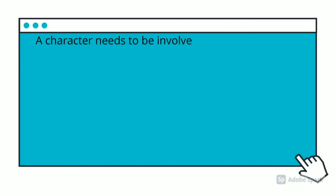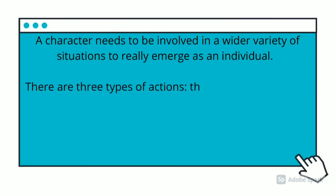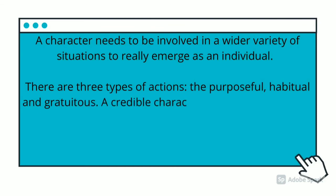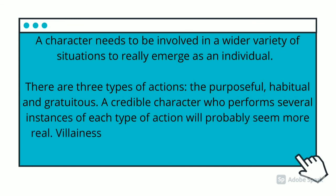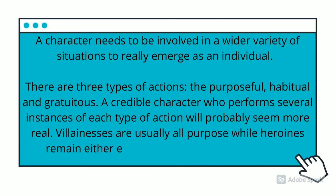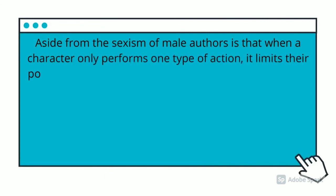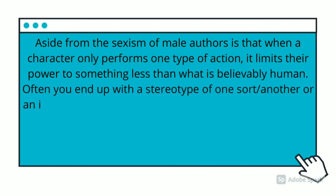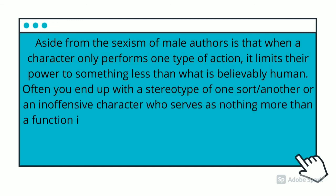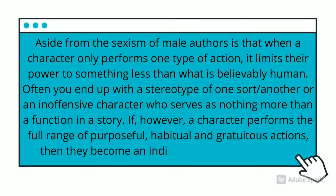A character needs to be involved in a wider variety of situations to really emerge as an individual. There are three types of actions: purposeful, habitual, and gratuitous. A credible character who performs several instances of each type of action will probably seem more real. When a character performs only one type of action, it limits them to something less than fully human. You often end up with a stereotype — a character who is nothing more than a function in a story. If a character performs a full range of purposeful, habitual, and gratuitous actions, then they become an individual rather than a type.